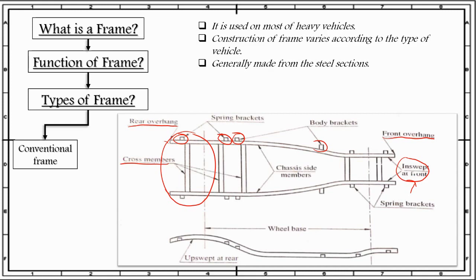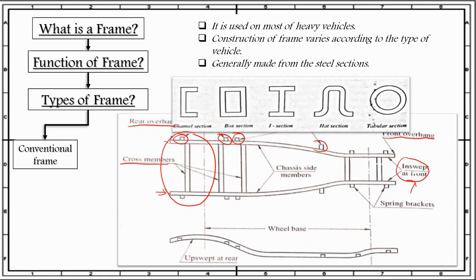Now, these sections—the cross members and the side members—are made up of either channel section, box section, I-section, hat section, or tubular section. The channel section and box section, that is this one and this one, have higher bending stiffness compared to solid square sections with the same cross-sectional area. Therefore, both these sections are used for side long members. The I-section, tubular, and hat sections are normally used for cross members.